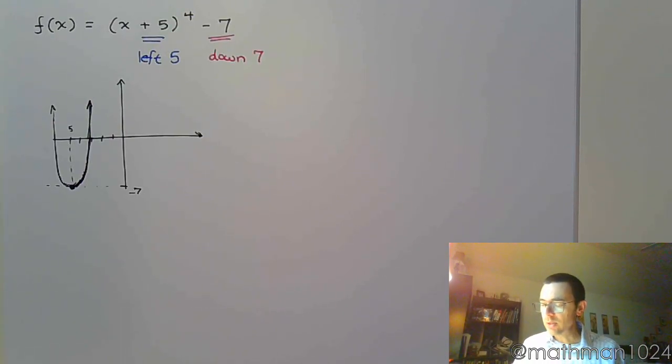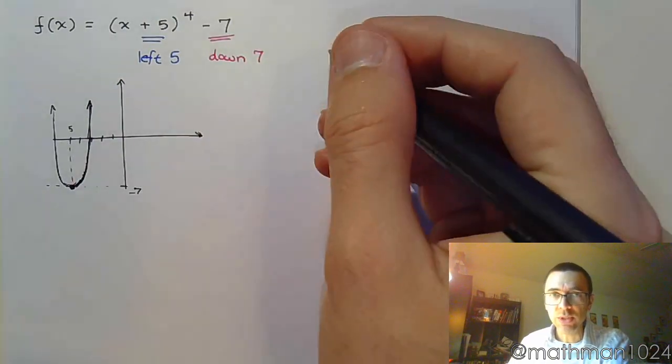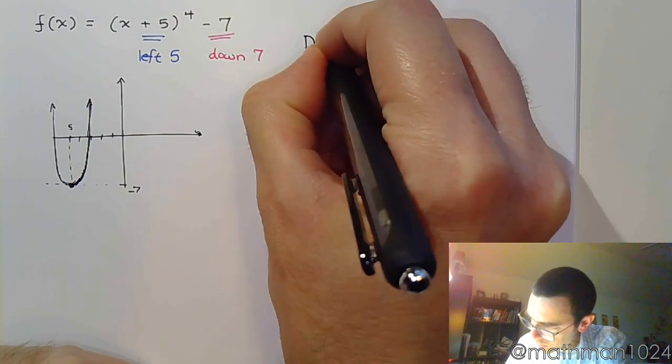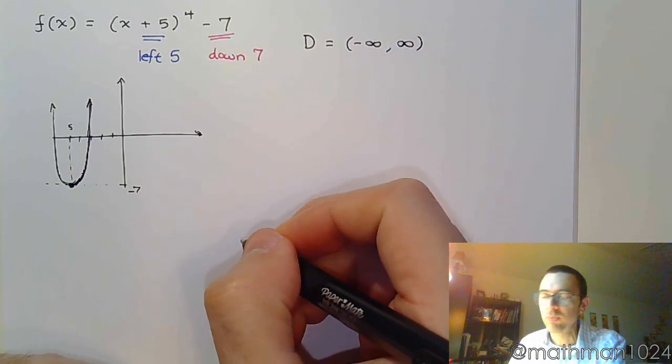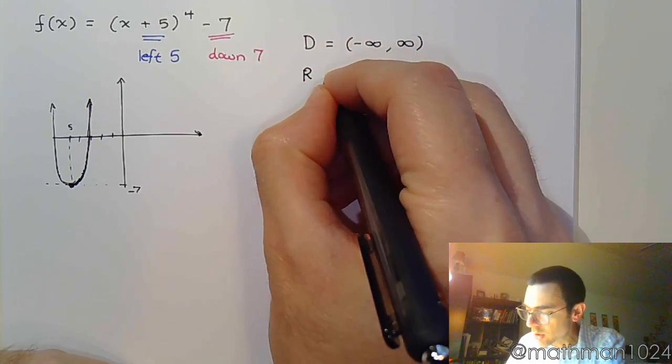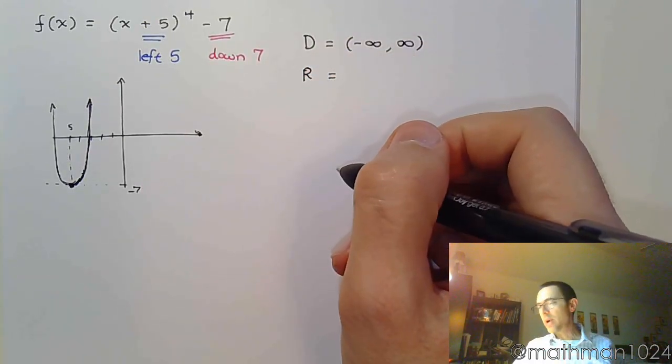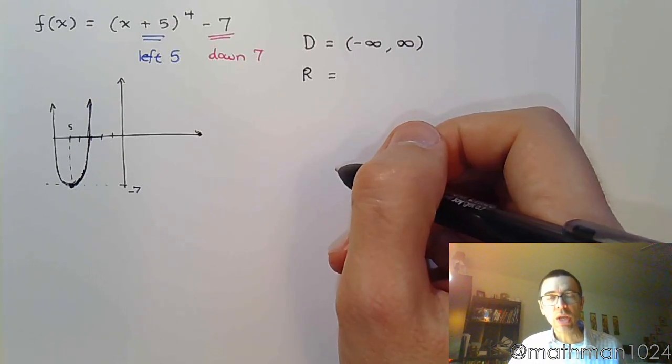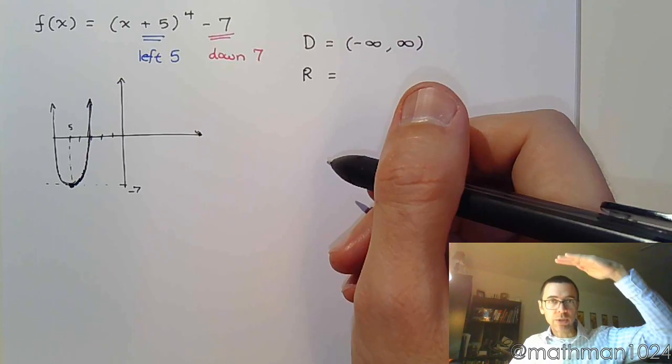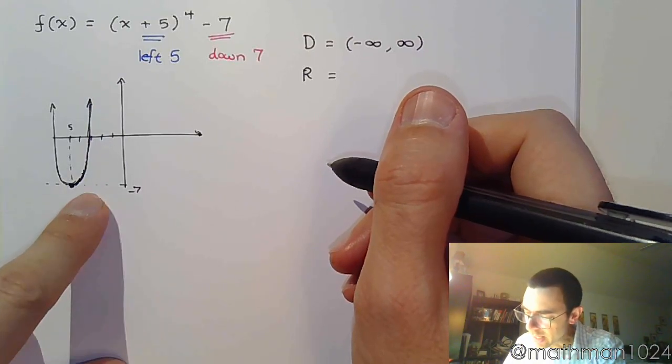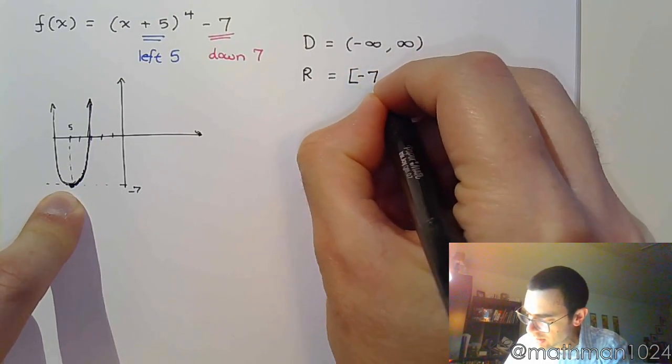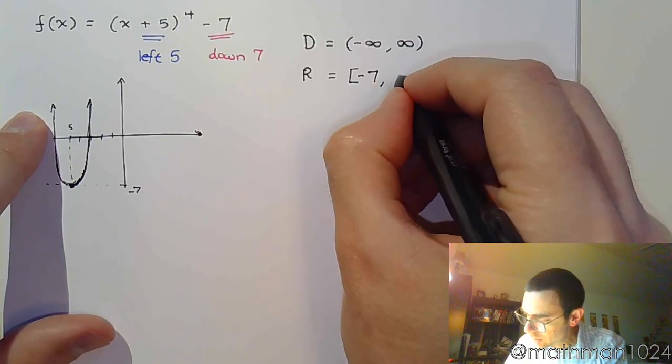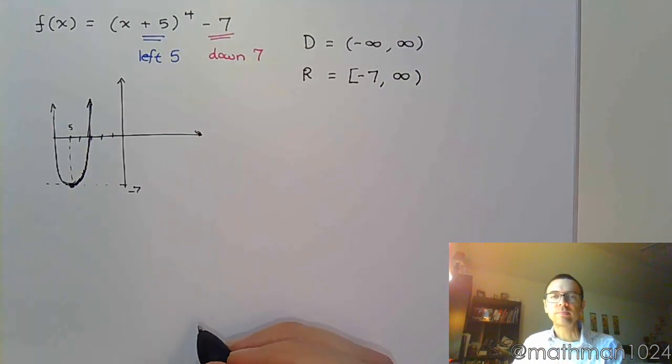So remember this is a polynomial function, so your domain is going to be all real numbers. Your range is something that we can pick up from our quick sketch. Again, we didn't have to be super accurate but we're close enough that we can answer these questions. Your range will be the set of values bottom to top and so the lowest I get is negative seven. Now this is a point so that's going to be included. That's negative seven going all the way up to infinity. So that's your domain, that's your range.